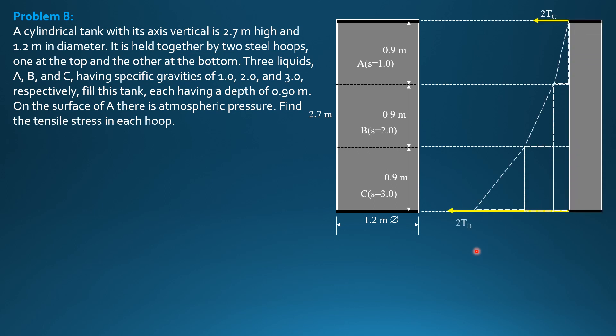So this is the free body diagram of the hoops and the pressure diagram. So that's F1, two thirds of 0.9 is 0.6 from the top, so its distance from the bottom, 2.1 meter. So F2 is this rectangular pressure diagram, so it's exactly at the level of this interface between B and C. So 0.9 from the bottom. F3 is two thirds of 0.9 is 0.6 plus 0.9, so 1.5 from the top, 1.2 meters from the bottom.